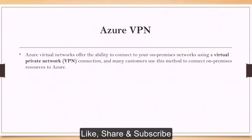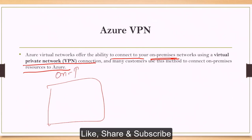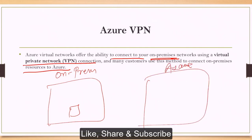Azure VPN — Azure virtual network offers the ability to communicate to your on-premises network using a virtual private network connection, and many customers use this method to connect on-premises resources to Azure. You have your on-prem organization infrastructure, and you want to use Azure resources. You can set up a VPN, and through the VPN gateway — one gateway is required to have a connection between the two kinds of setup.